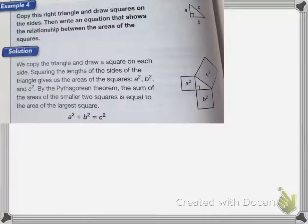So the Pythagorean Theorem says that the side A squared plus the side B squared equals the side C squared. So on this one, you can see that with the squares and how it's drawn.